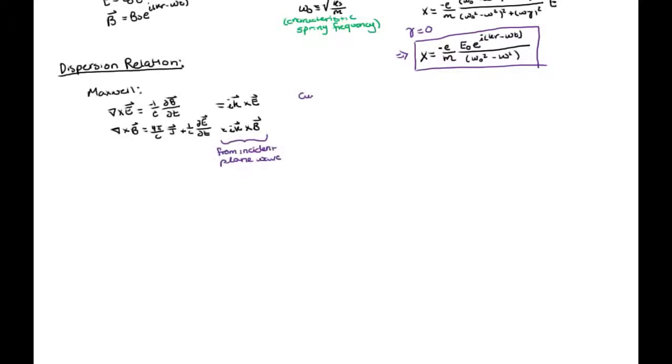We can solve these equations by explicitly determining our current density within the plasma. Our current density is defined as the charge of the electron multiplied by the electron density multiplied by the velocity of the electrons.